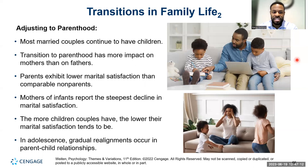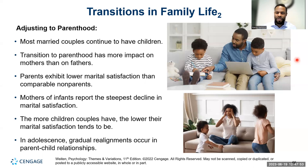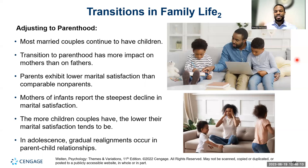Mothers of infants report the steepest decline in marital satisfaction, often because men feel women should take complete responsibility for infant care. When men take an active role and give the mom a chance to rest, and when family support steps in to provide breaks, that helps mitigate marital dissatisfaction. In adolescence, gradual realignments occur in the parent-child relationship — children can make more decisions, get car keys, have curfews, and are less dependent. But there's more tension because they want autonomy while living under your roof, creating conflict during this time.